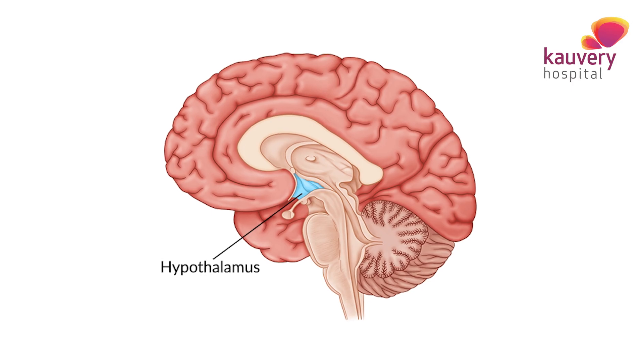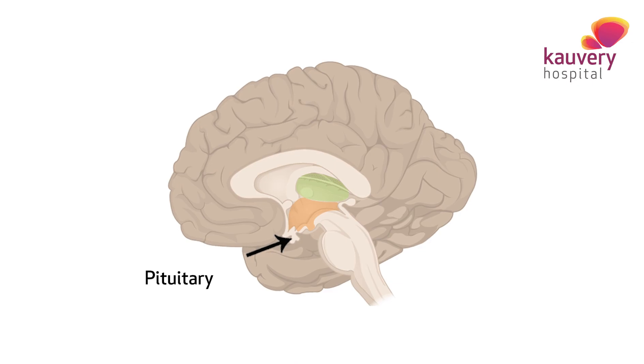If there is no ovulation, the cause may be from the hypothalamus, the pituitary, or at the ovarian level. We have to do all the tests to find out where the defect is and then give treatment accordingly.